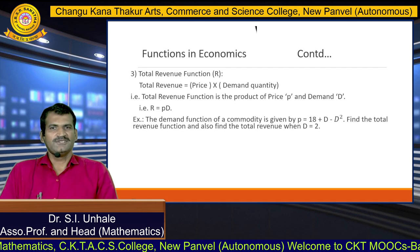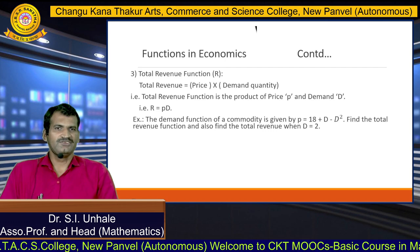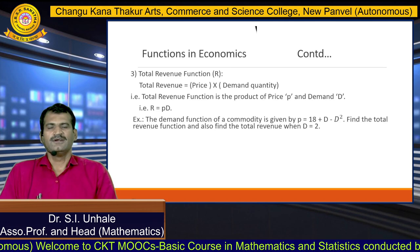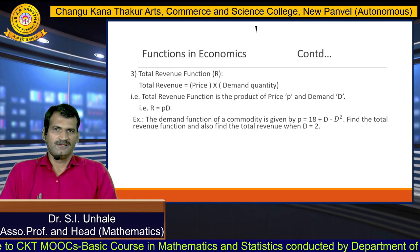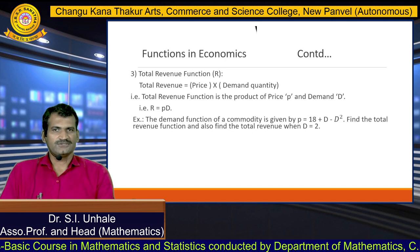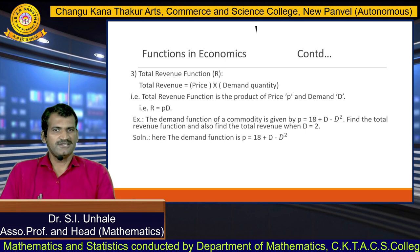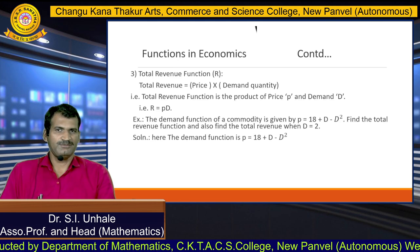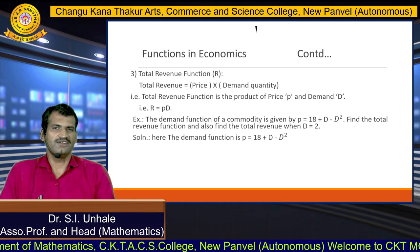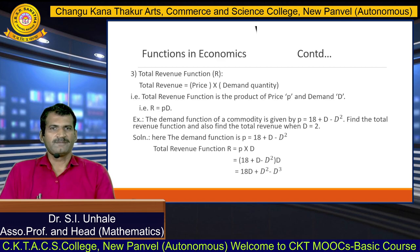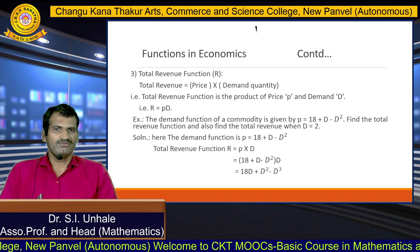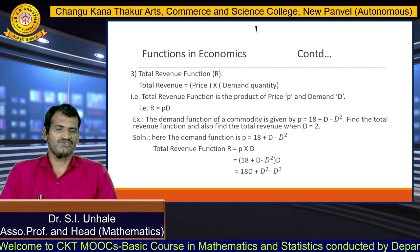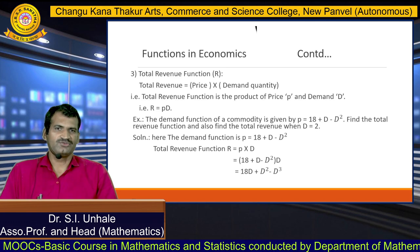Here we see an example of the demand function. The demand function for a commodity is given by p equals 18 plus d minus d². Find the total revenue function, and also find the total revenue when demand is 2 units, that is when d equals 2. Total revenue function R equals p times d. Substituting p equals 18 plus d minus d², we get R equals 18d plus d² minus d³. So the total revenue function is R equals 18d plus d² minus d³.